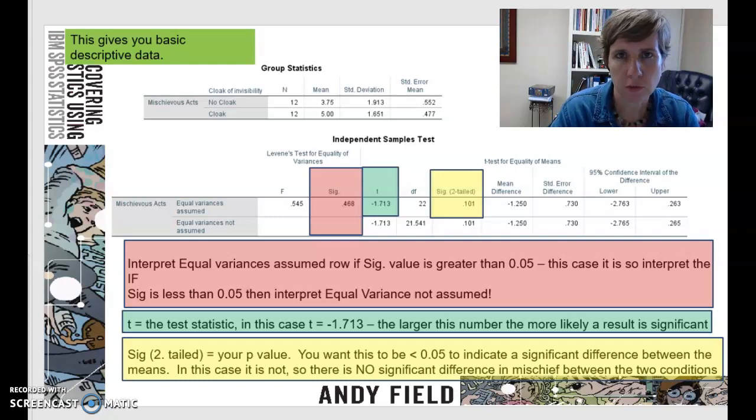Okay, so this is the output that you get when you run SPSS, an independent t-test, and I'm going to walk through the important pieces of information that you need to look for. So of course, you've got up here your basic descriptive stats, you've got your means, you've got your standard deviation, and you're ultimately comparing this 3.75 to the 5.0.